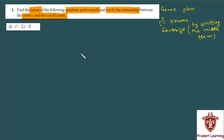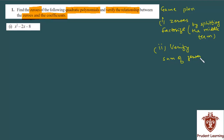Doosra kaam: jab aap zeros nikaal lenge, toh zeros nikalne ke baad aapko relationship verify karni hai between zeros and the coefficients. To verify karne ke liye hum jo formula use karenge woh hoga sum of zeros and product of zeros. Inko hum use karne wale hain. Question par aate hain.